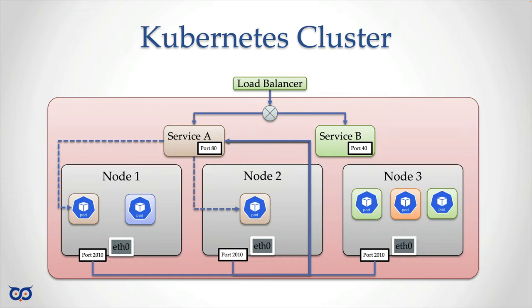This is different from when we do a proxy to a pod, where we select one pod and bind its IP address. When you do a proxy to a deployment or service it just picks one of the pods — we demonstrated this a couple of videos ago where traffic keeps hitting just that one pod. With a NodePort service, hitting port 2010 on any node goes to the service, so we still get the load balancing benefit — it's not picking one pod, it's pointing to the full service.